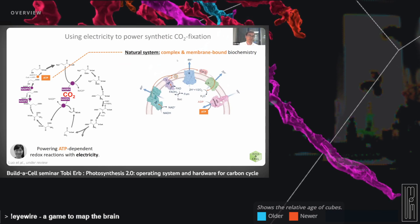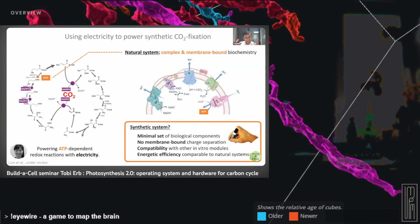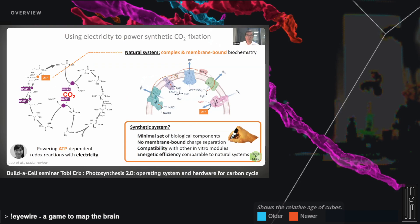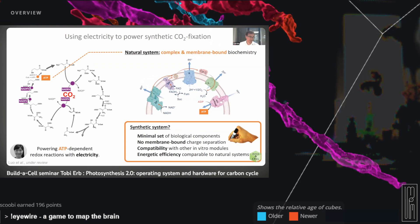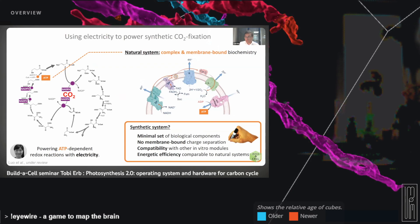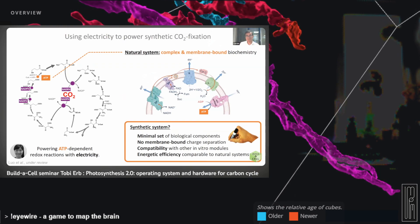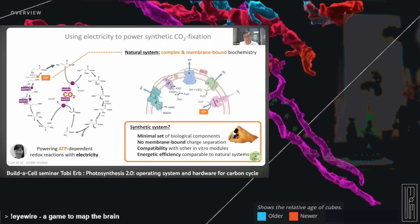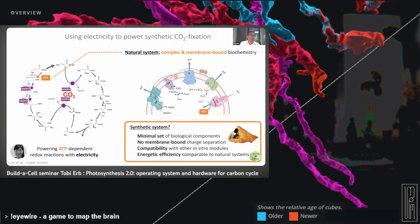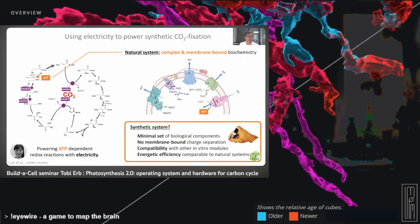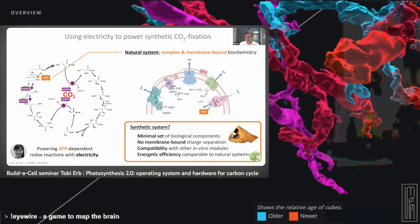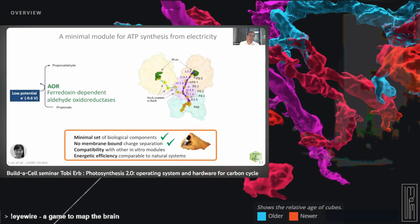Shan-Shan Luo in our lab was brave enough to think about ways to use electricity to build ATP. She had three or four goals in mind: a membrane-free system, since membranes are too complex to rebuild in the lab; a minimal set of components; compatibility with in vitro biocatalysis; and viable energy efficiency. What she found was an enzyme able to directly reduce carboxylic acids into aldehydes — it can take acetate and produce acetaldehyde, or propionate and make propionaldehyde — using low-potential electrons at around minus 0.6 to minus 0.9 volt.